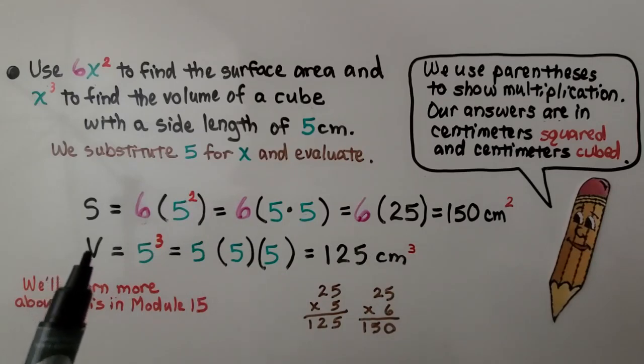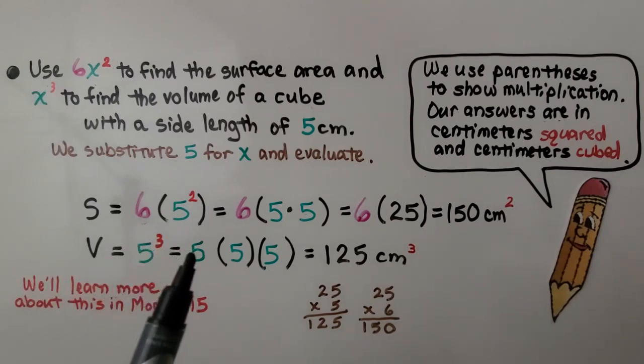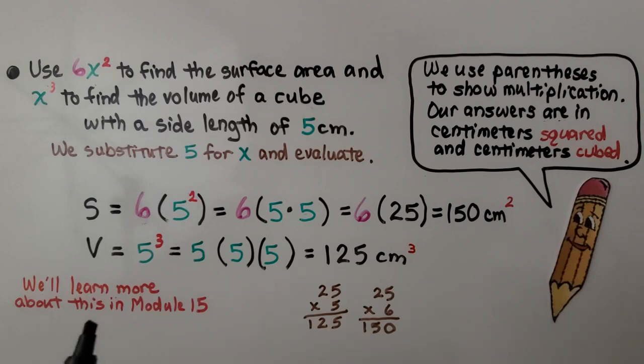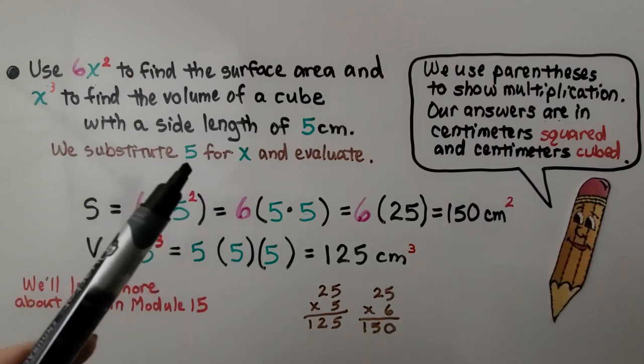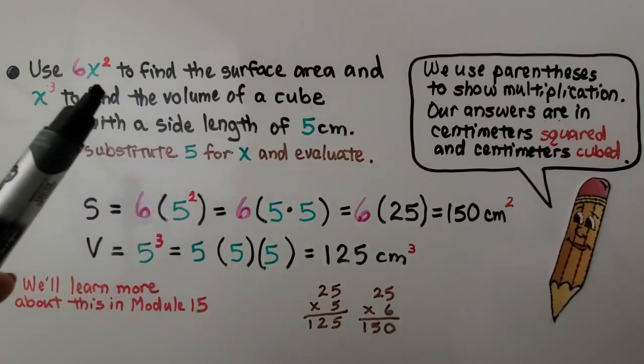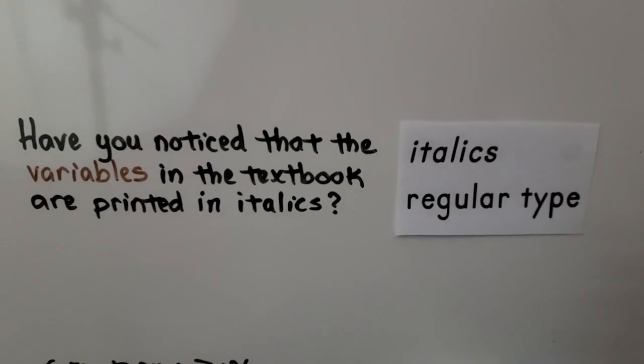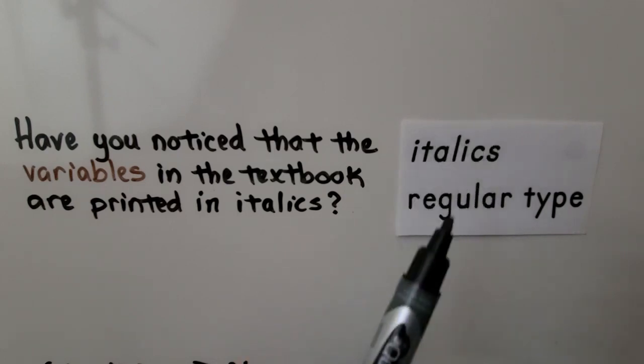For volume we have a capital V and it's equal to five cubed instead of x cubed. We put five in there, we substitute it in. That means we have five times five times five. That means we have 25 times five. That's 125 centimeters cubed. And don't worry if this is hard for you to remember because we're going to learn more about surface area and volume coming up in module 15. Right now the important thing is that you know how to substitute the value into the expression in place of the variable. Have you noticed that the variables in the textbook are printed in italics? Italics lean a little bit to the right. They lean where regular type doesn't.